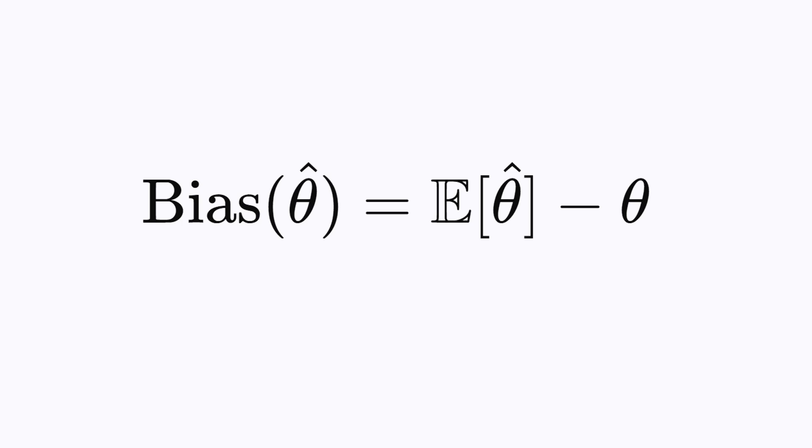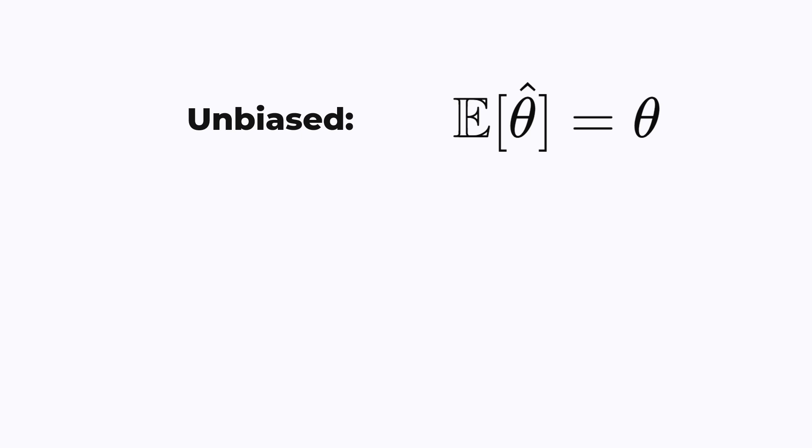The bias of an estimator is defined as the difference between its expected value and the true value of the statistic. An estimator is unbiased if the expected value of the statistic is equal to the true value.